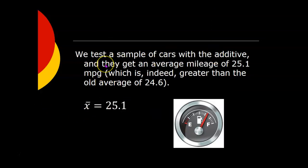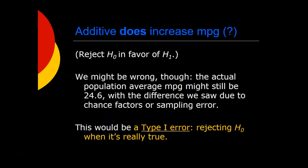So let's say we do test a sample of cars with the additive. We've put it in a bunch of cars of this kind, test to see how many miles per gallon they get. And we come up with, they get an average mileage of 25.1 miles per gallon. And that is indeed greater than the old average of 24.6. So the question is, is it enough higher? We might say, yes, this additive does increase mileage. The average mileage of the cars with this additive was higher than it was before. If we say that, we would be rejecting the null hypothesis. Remember, that's that there's no difference. And favoring the alternative hypothesis, that it does make a difference. But if that was our conclusion, we might be wrong about that.